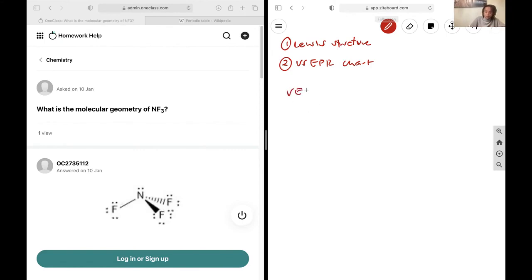And so for the Lewis structure, I start by counting my valence electrons. So I have 5 from the nitrogen plus 3 by 7 because of the fluorine. This is going to give me 21 plus 5, so I have 26 electrons to work with here.